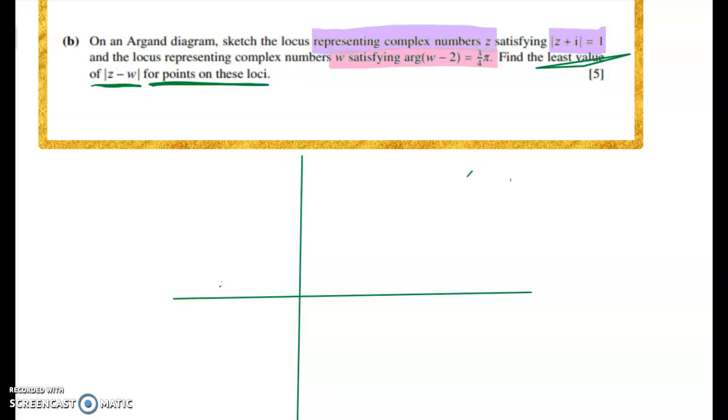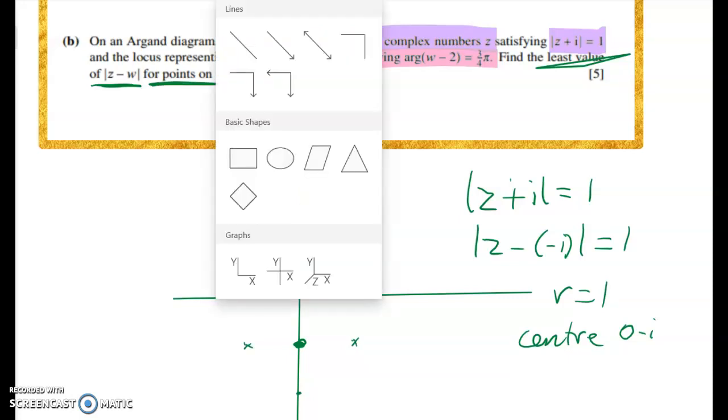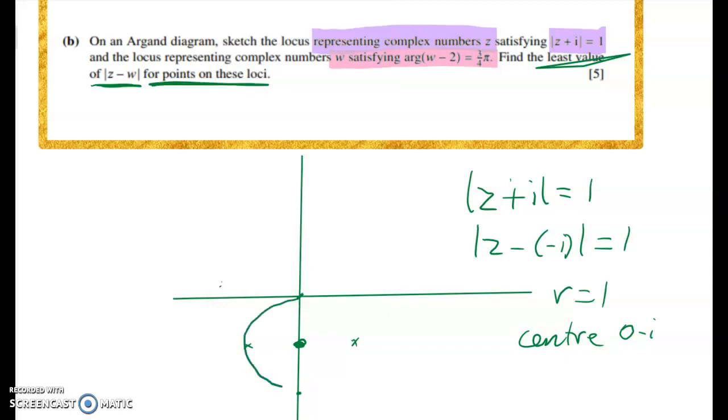So we know here that this locus |z + i| = 1 is the equation of a circle and the radius of the circle is one and the center is going to be at 0 - i. So down here. So let's mark in very roughly which points are on my circle and now I'm going to try and draw a circle but I'll do it freehand. So there's a bad looking circle but you get the idea—oh that's nice, that made it a beautiful circle straight away good.